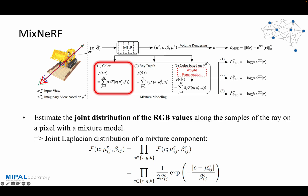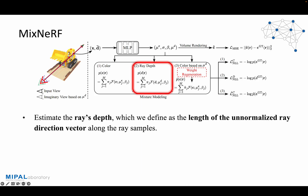Let's take a look at MixNeRF in more detail. First, our MixNeRF estimates the joint distribution of the RGB color values along the samples of the ray on a pixel with the mixture model, which is derived from a weighted combination of component distributions, which we set as a Laplacian distribution. We then introduce ray depth estimation as a valuable auxiliary task. The ray's depth, defined as the length of the unnormalized ray direction vector, is estimated with shared scale parameters beta and mixing coefficients pi to model the depths for each ray. By optimizing the mixing coefficients pi and parameter beta using both depth and color values as supervision, our MixNeRF becomes more robust to slight changes in geometry, which is crucial for maintaining high-quality rendered images.